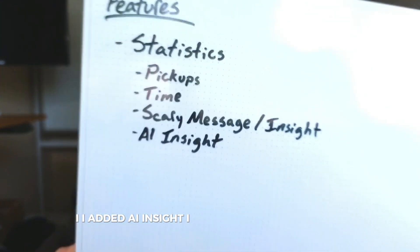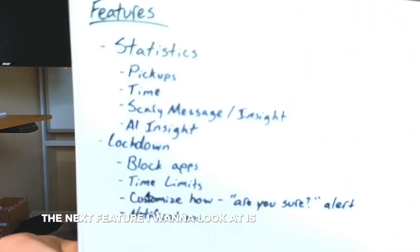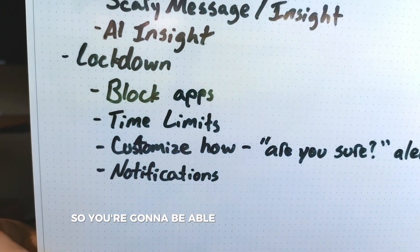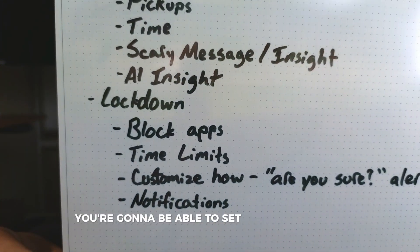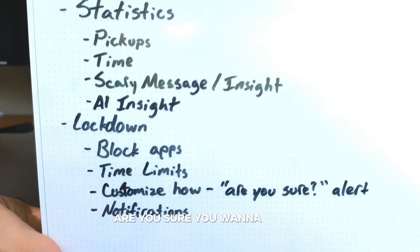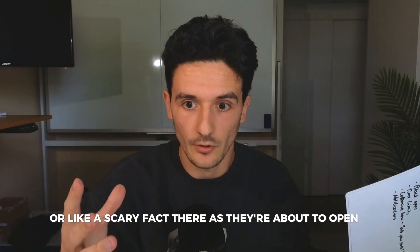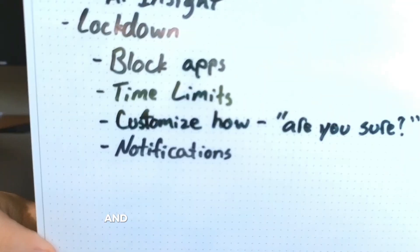From there, I added AI insight. I feel like you could use AI, some sort of library here, to say like, come up with a fact — if this person wasted 10 hours, what would you say to sort of wake them up? The next feature I wanna look at is what I'm gonna call lockdown mode. You're gonna be able to block certain apps and categories, set time constraints. And I think it would be cool to customize how apps are blocked — like adding a message: hey, are you sure you wanna do this? Or like a scary fact as they're about to open it, like, this is the 17th time you've opened this thing. And then notifications for like, hey, you should go into lockdown mode.